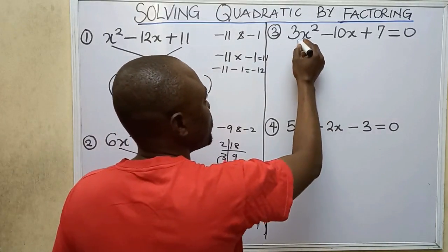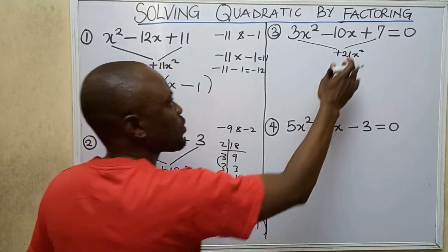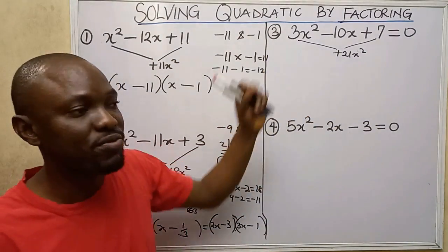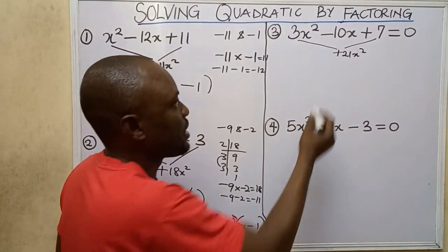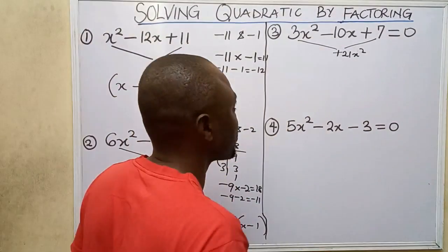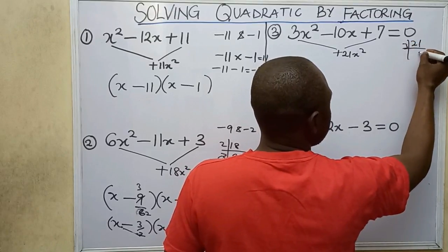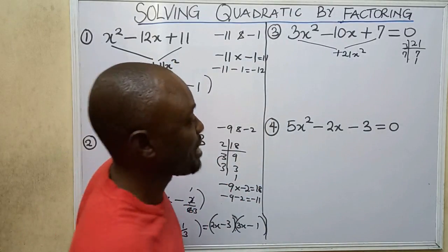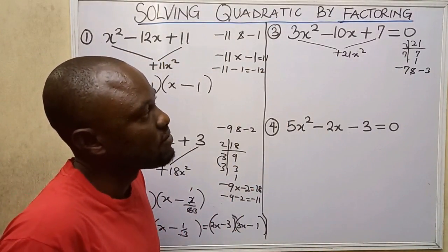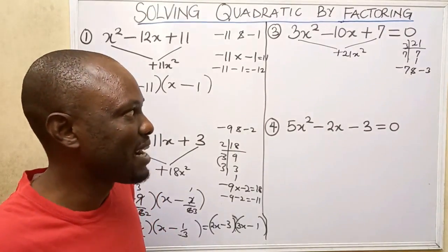Now the next problem: multiplying the first term by the last term gives plus 21x squared. This is different from the first two problems because this equation is set equal to zero, meaning we need to find two values for x. I want two factors so that when I multiply them I get plus 21 and when I add or subtract them I get minus 10. The prime factors of 21 are 3 and 7. So minus 7 and minus 3 are my factors, because minus 7 times minus 3 gives plus 21 and minus 7 minus 3 gives minus 10.